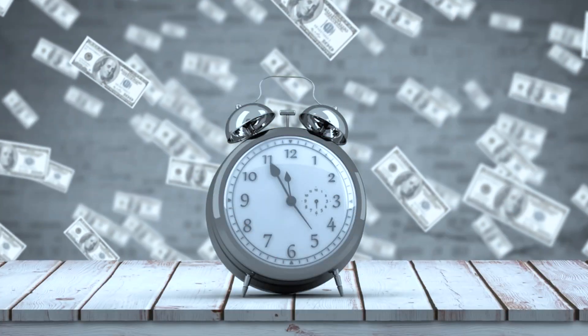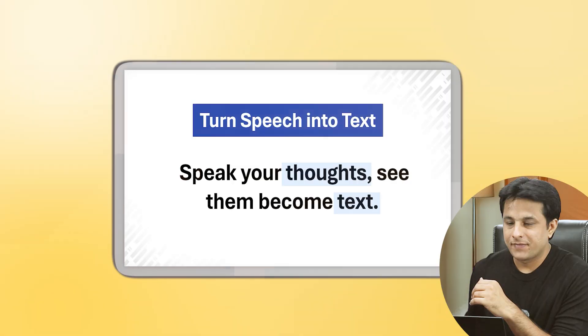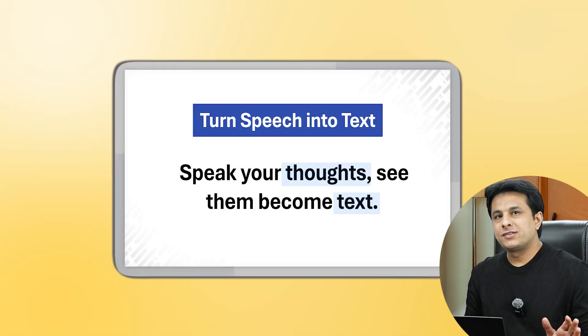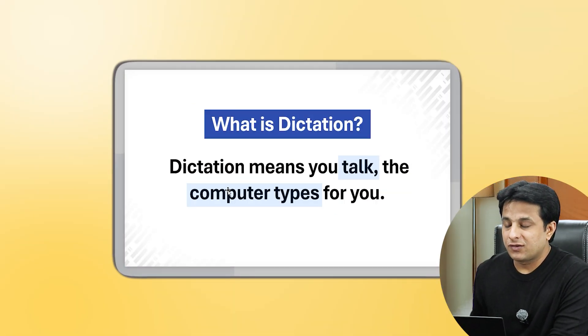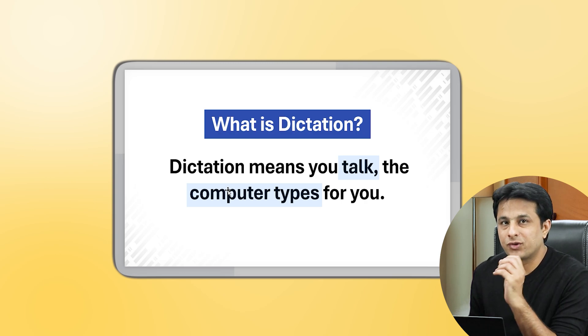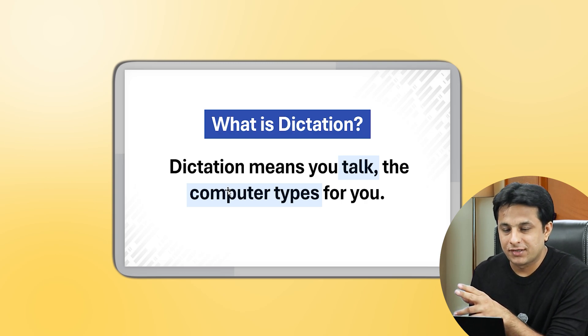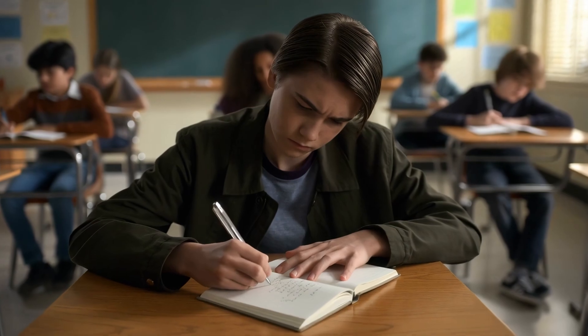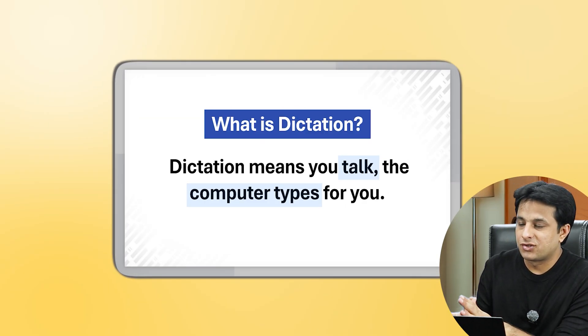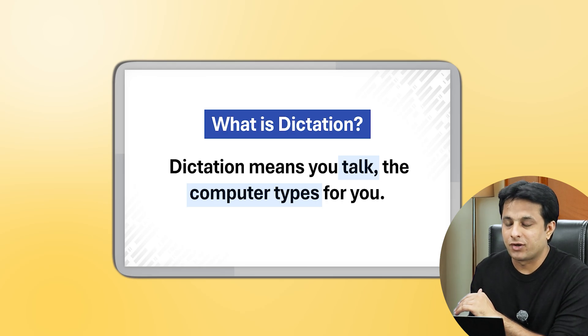Welcome to this video on ChatGPT, on a topic named dictation. Dictation is something which is going to save a lot of time. Dictation turns your speech into text — you speak your thoughts and you can see them becoming text. In the older times, dictation was like you keep on speaking and someone will write for you. But today we have an assistant named ChatGPT who can write it on your behalf. Simply put: dictation means you talk, the computer types for you.